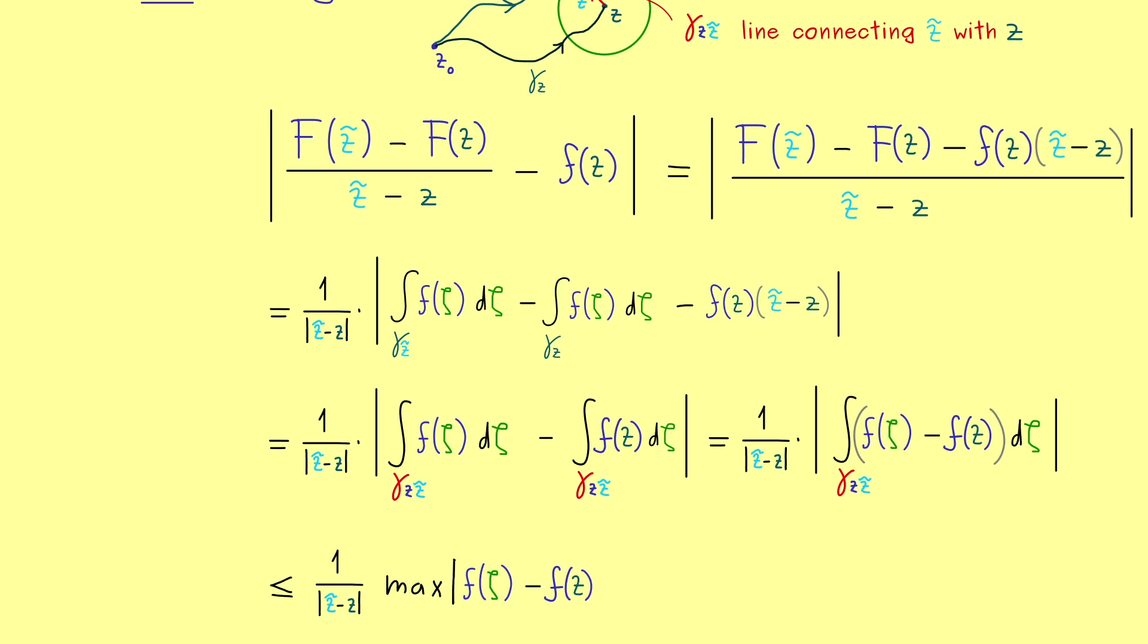So more precisely, here we have the maximum of the two functions in the difference times the length of gamma_z_z_tilde. However, by the definition of this new curve here, we already know the length is just this difference here in the absolute value. In other words, this is the sole reason we choose this line, because now we can cancel here.